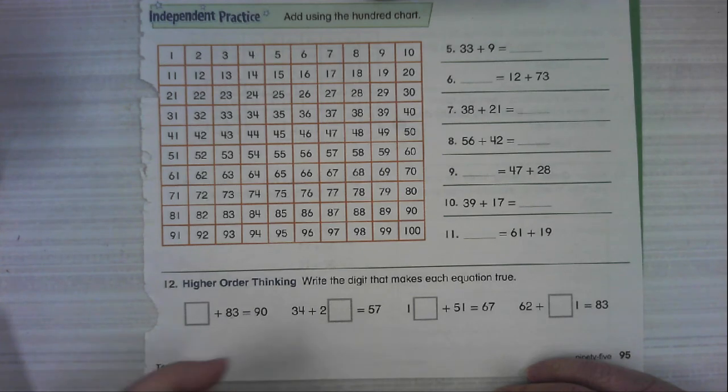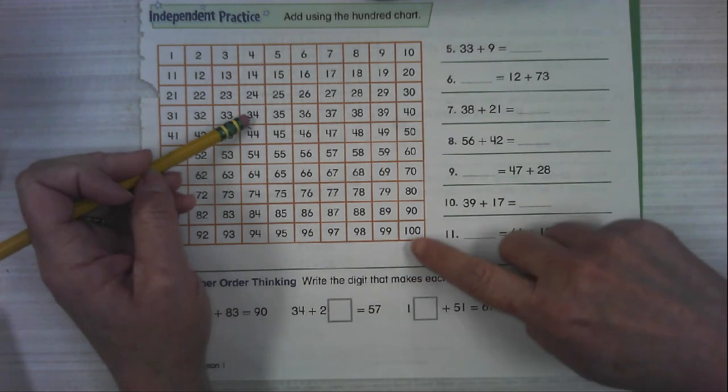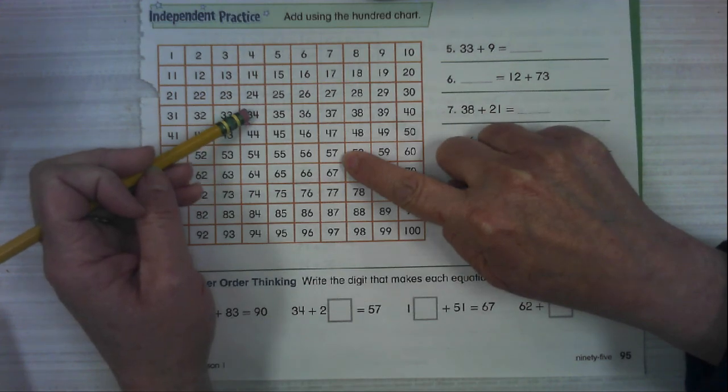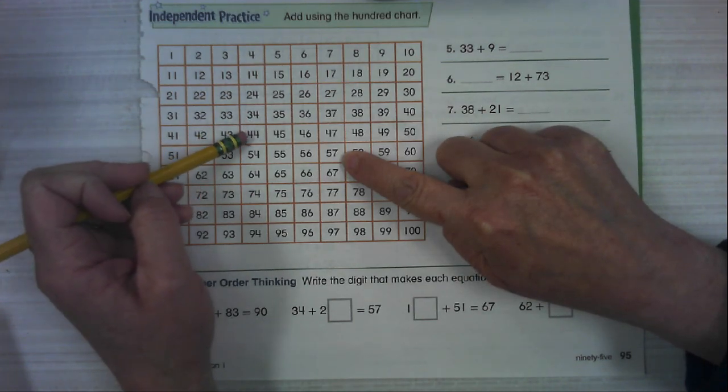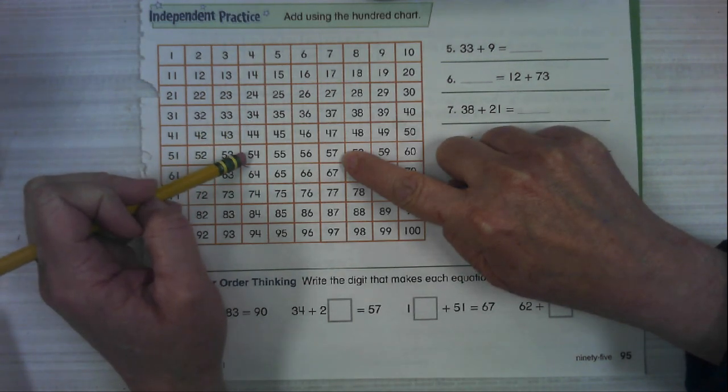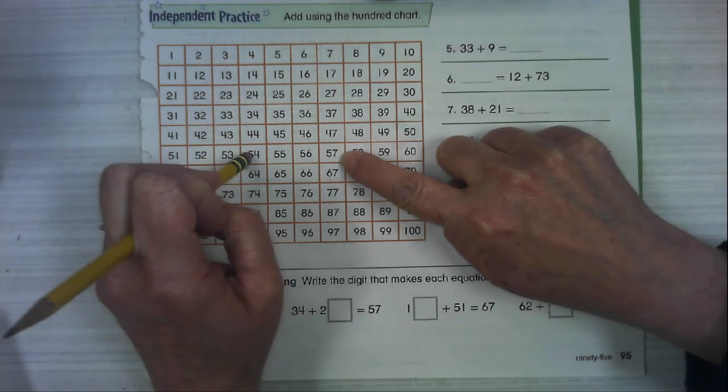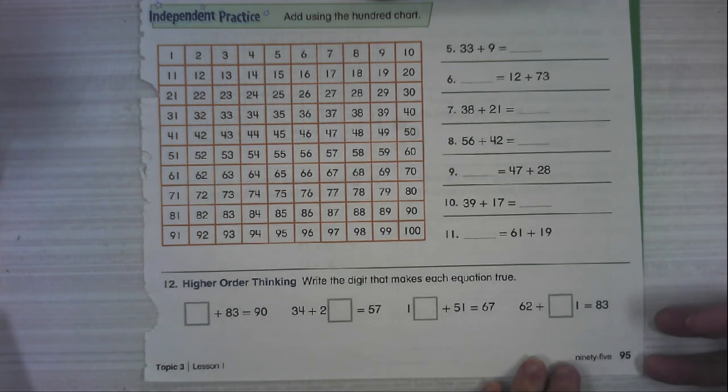For this one, 34, we're trying to get to 57. And they've told us that we're going to go two 10s. So you know it's going to be 10, 20. How many ones do you have to move to get to 57?